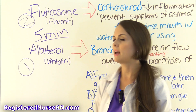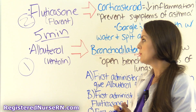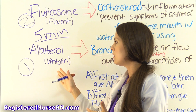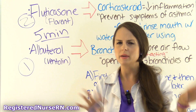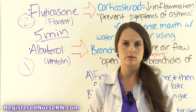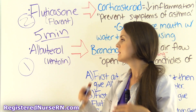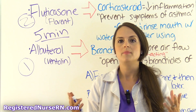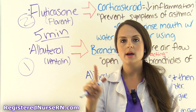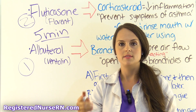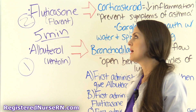Just for more information: say you were giving albuterol and they needed two puffs, and you weren't going to be giving corticosteroids — this also applies if you're just giving corticosteroids alone. If they need two puffs of albuterol, you give one puff, wait one minute because it's the same drug, and then give the other one. Just remember that to keep it straight, because students sometimes get that confused.